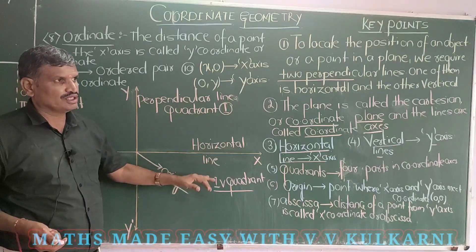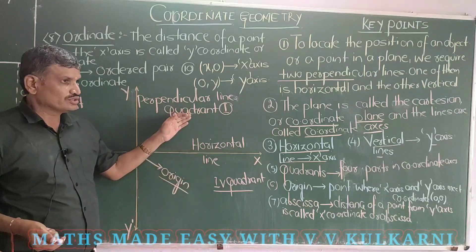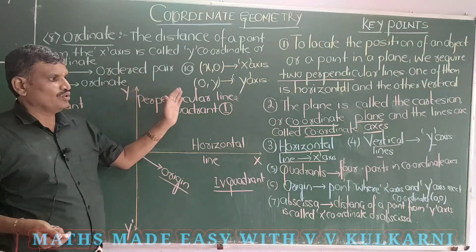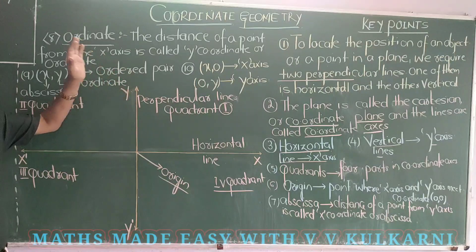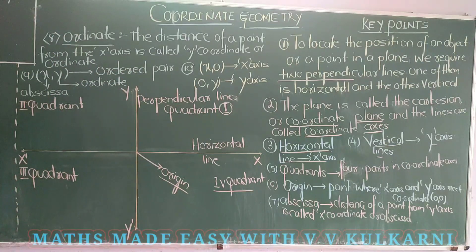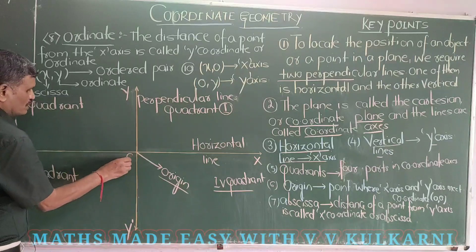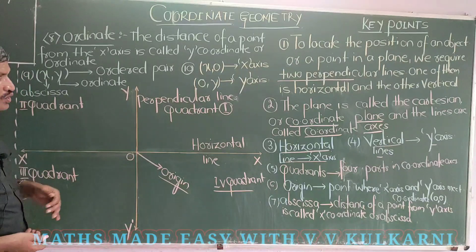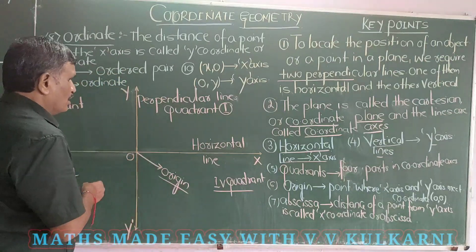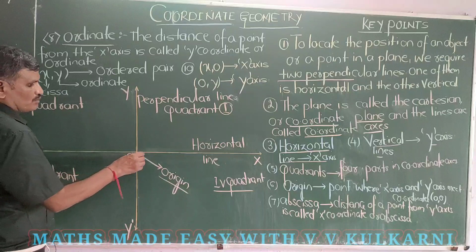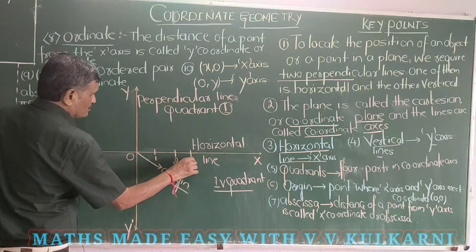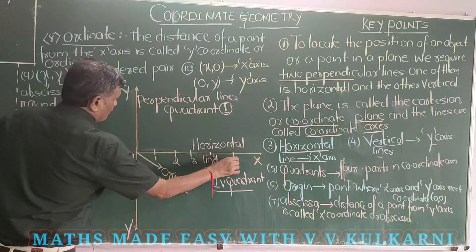Can we take this as first? No. Can we take this as second? No. This is a fixed rule and you must compulsorily follow that rule. Origin is always denoted as O. And just like a number line, on the number line we have: one, two, three, four, five on one side, and minus one, minus two, minus three, minus four, minus five on the other side.